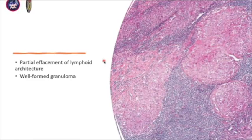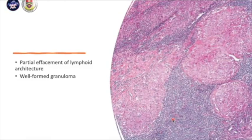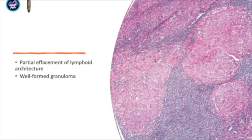If you look at the histological slides of this pathology, you can see there's a partial effacement of lymphoid architecture. The normal lymphoid architecture has a well-defined, distinct cortex and paracortex area. If there is a disruption of this architecture, we call it effacement. If there is total loss, we call it total effacement; if partial loss, we call it partial effacement. So there is a partial effacement of lymphoid architecture by this well-formed granuloma.